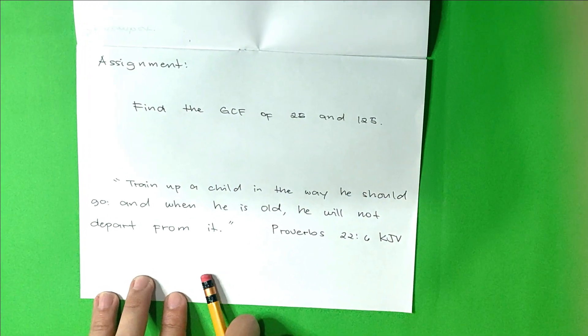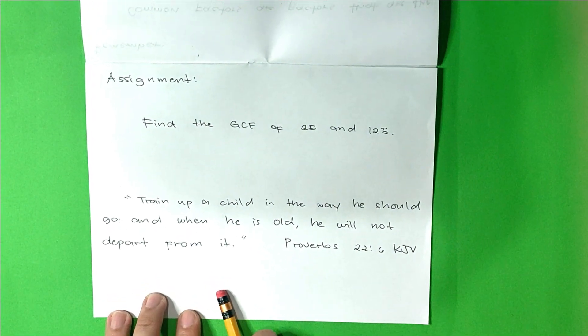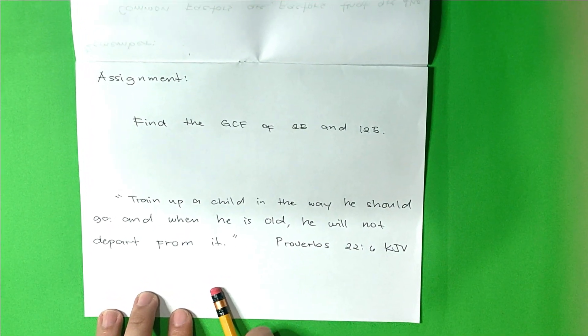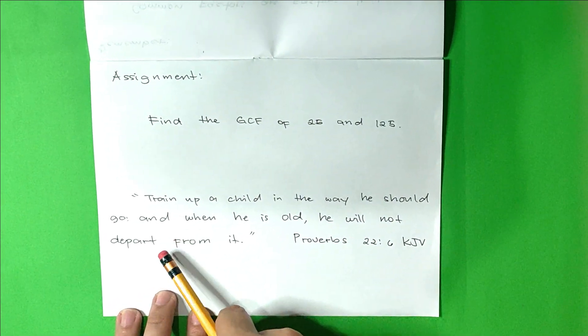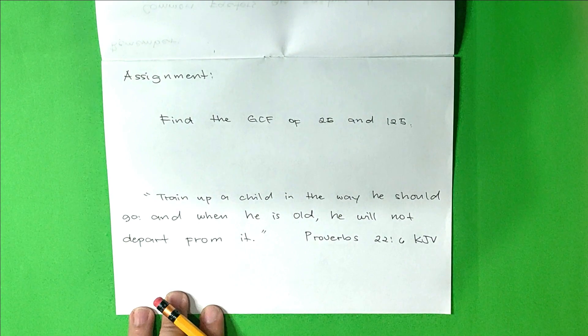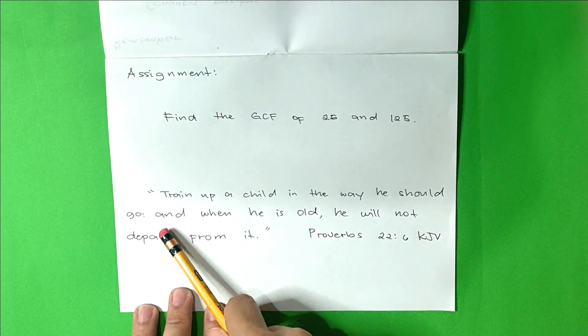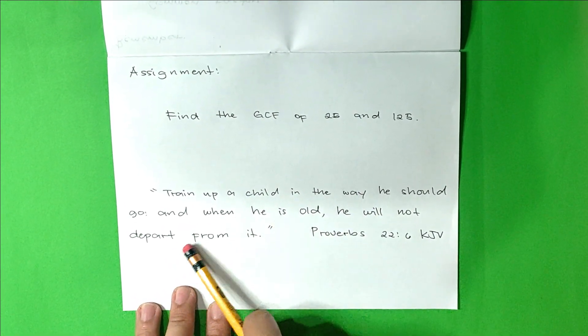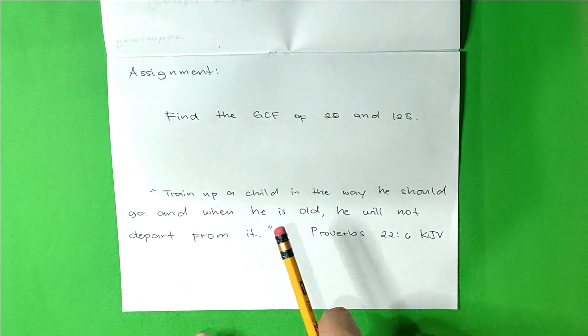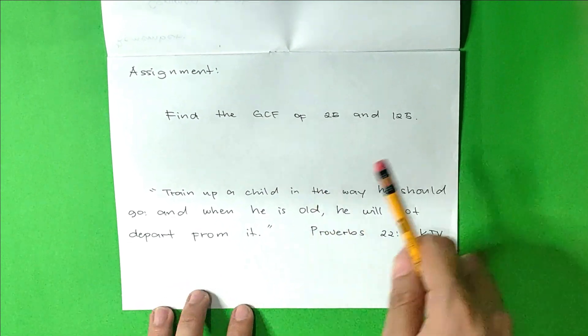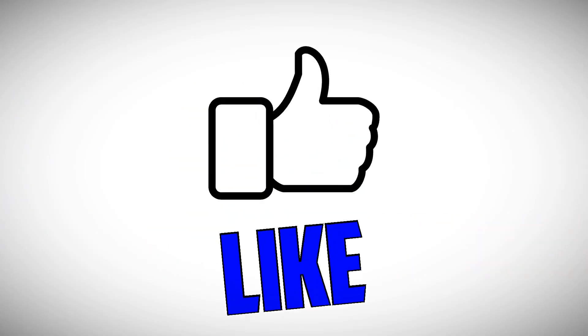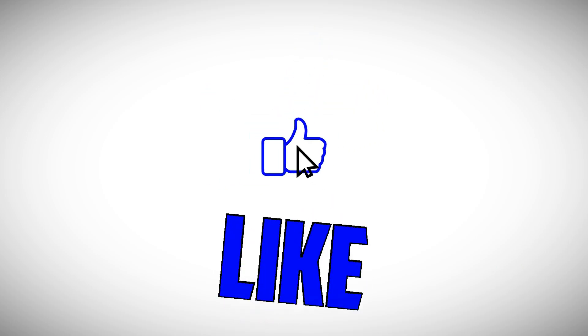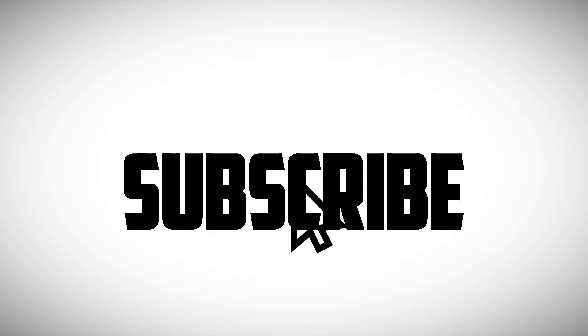I want to end with a Bible verse that can be found in Proverbs 22, verse 6. It says, train up a child in the way he should go, and when he is old, he will not depart from it. That's all for my online teacher. If you are new to this channel, please subscribe and click the notification bell so that you will be notified when a new video lesson is uploaded. Good day!